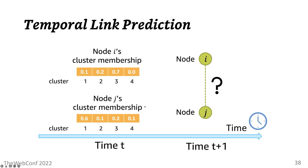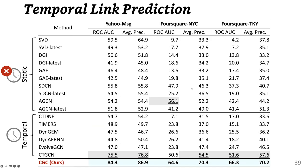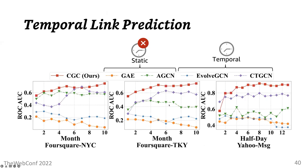In temporal link prediction experiment, we estimated whether two nodes I and J will be connected at time T plus one, given their cluster memberships at the previous time step. The motivation of this evaluation is that those in the same cluster tend to form a link between them. In experiments involving three datasets, the proposed CGC performs better than both the static and temporal baselines consistently, achieving up to 29% higher link prediction performance. These figures show how the performance changes over time, where CGC wins for most time steps.